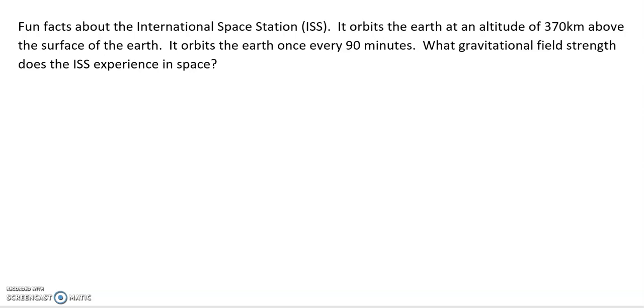All right, today we're going to work on some circular motion on a planetary scale, or at least near our planet. So we're going to talk about the International Space Station. Fun facts about the International Space Station: it orbits the Earth at an altitude of 370 kilometers above the surface of the Earth. It also orbits the Earth once every 90 minutes, so it's actually moving really fast. The question is, what gravitational field strength does the International Space Station experience in space?